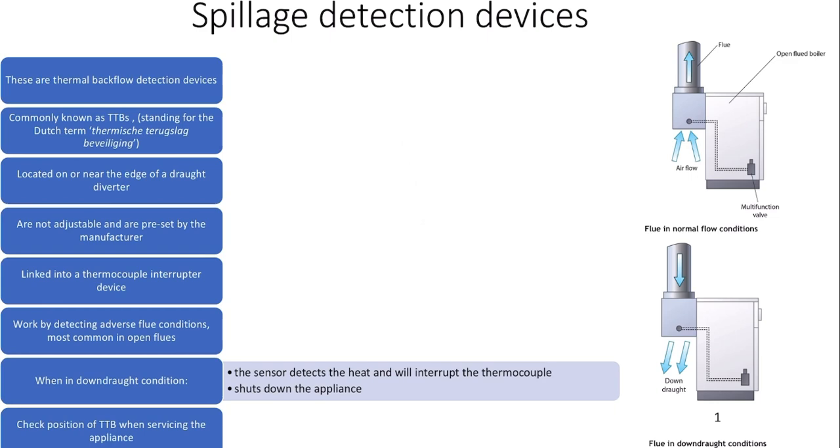They are generally located near the edge of a draft diverter within an open flue system. They're not adjustable and the settings inside them are preset by the manufacturer.